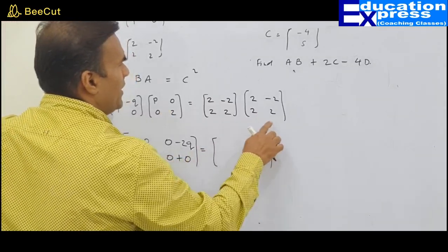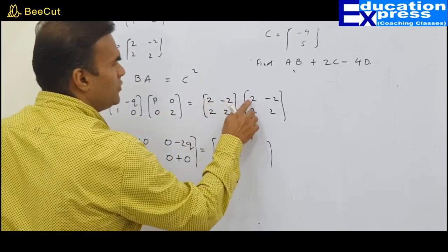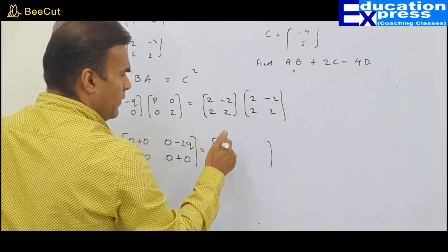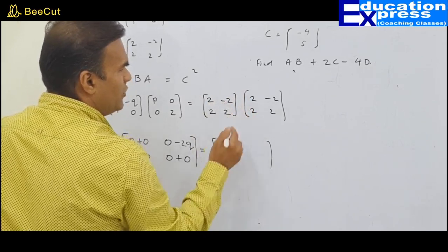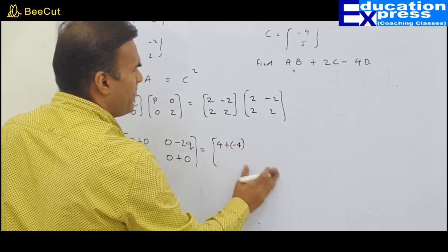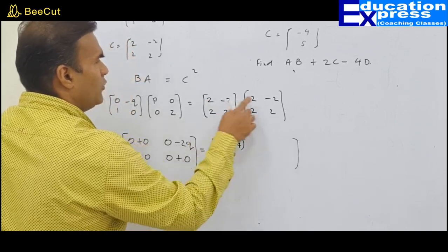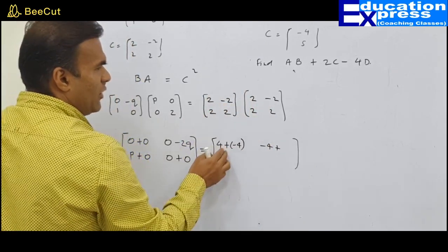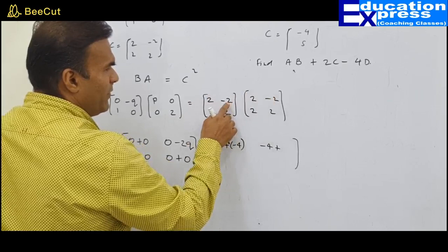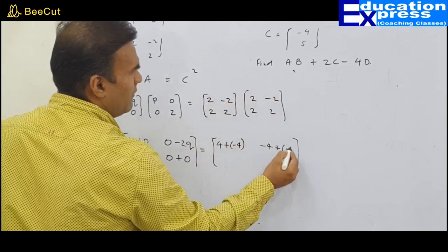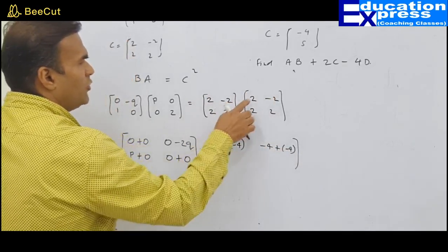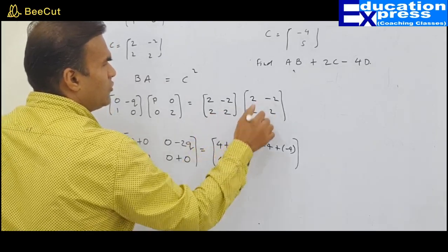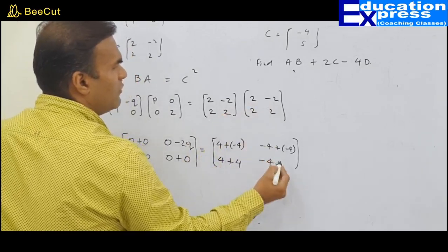Now equals C squared. We have multiplication possible for C into C: 2 into 2 is 4, plus minus 2 into 2 is minus 4. Next, 2 into minus 2 is minus 4, plus 2 into 2 is 4. Then 2 into 2 is 4, plus 2 into 2 is 4. Finally, 2 into minus 2 is minus 4, plus 2 into 2 is 4.